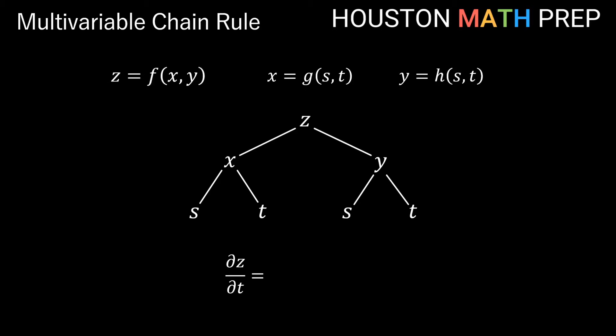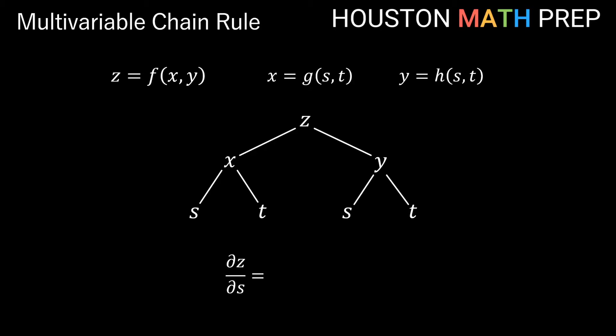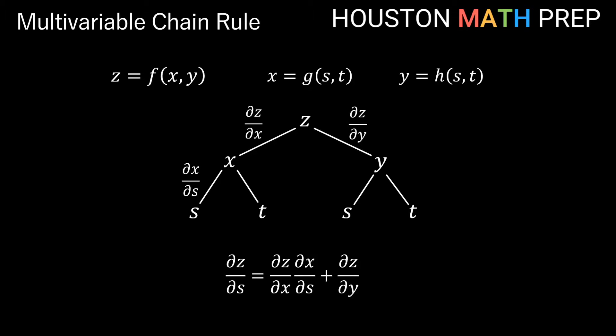We only follow paths on the tree that lead to t when calculating ∂z/∂t. Going down the left side: ∂z/∂x is partial since there's a choice at z, and ∂x/∂t is also partial since there's a choice at x. Going down the right path: ∂z/∂y is partial, and ∂y/∂t is also partial. For ∂z/∂s, every stage of the tree has a choice of paths, so all are partial derivatives. Going left gives ∂z/∂x times ∂x/∂s; going right gives ∂z/∂y times ∂y/∂s.